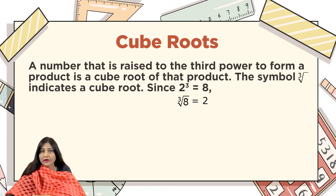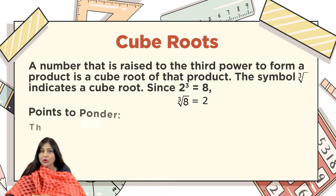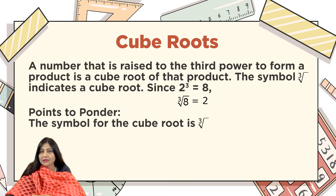Cube roots: a number that is raised to the third power to form the product is called a cube root of that product. The symbol for the cube root has a small 3 written over the radical to indicate a cube root. Since 2 raised to the power 3 equals 8, the cube root of 8 equals 2. Note: in a square root we don't write the index 2, but in a cube root we write the 3.